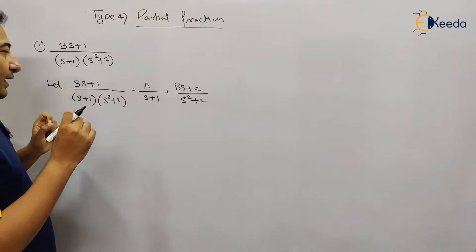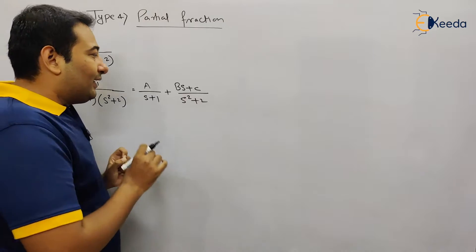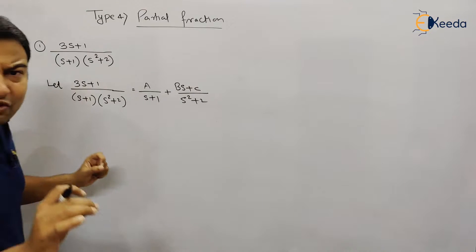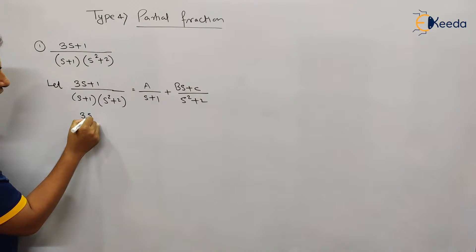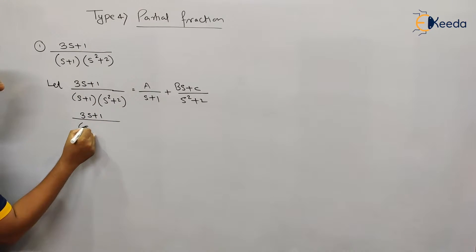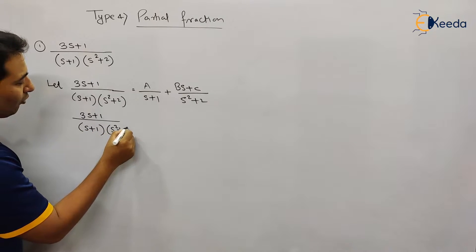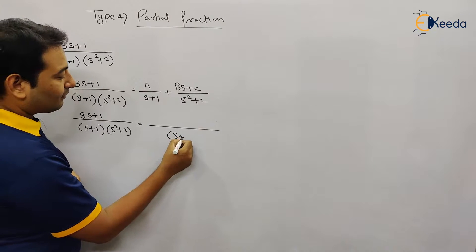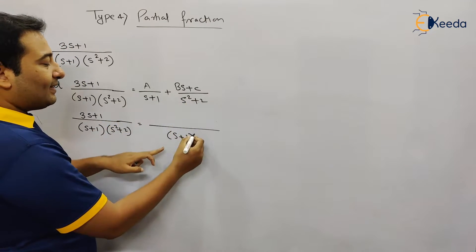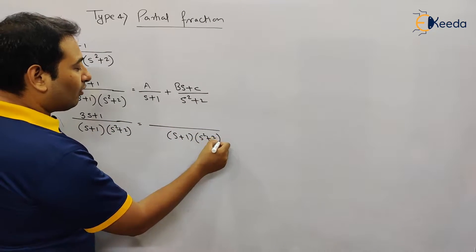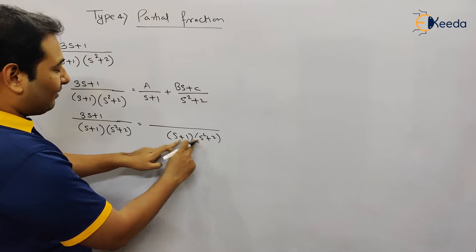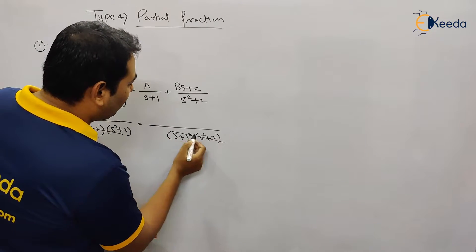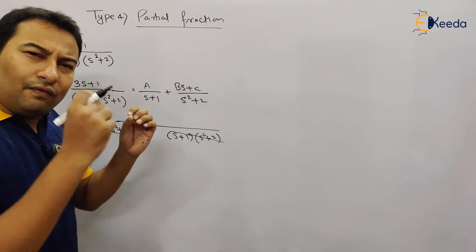Now we will solve it. The next step is to take the LCM. In case of partial fraction, see the trick: whatever is the denominator, write it down as it is — this will be the LCM. Whatever is the denominator here, the same term will come and they will be cancelled from both sides. It is fixed, it will always be the same.